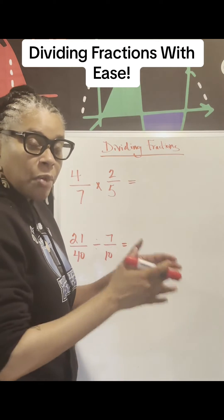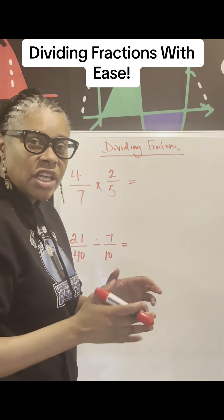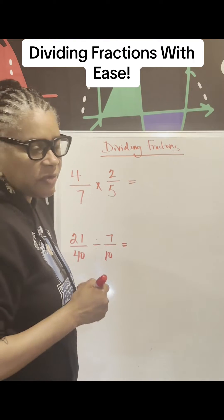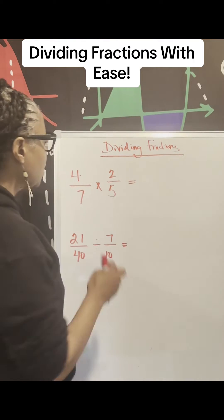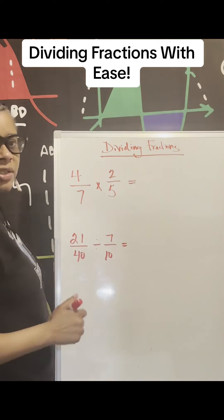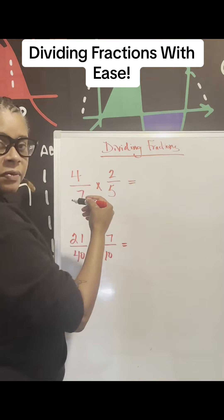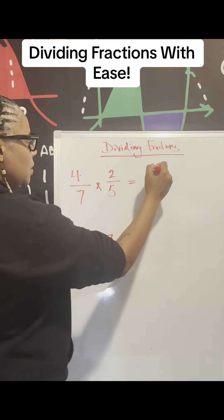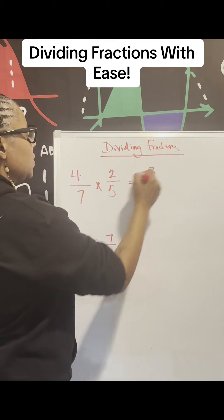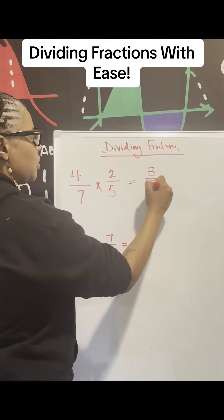Multiplication and division are inverse operations of each other, right? So how would we do this? 4 times 2 is 8. 7 times 5 is 35.